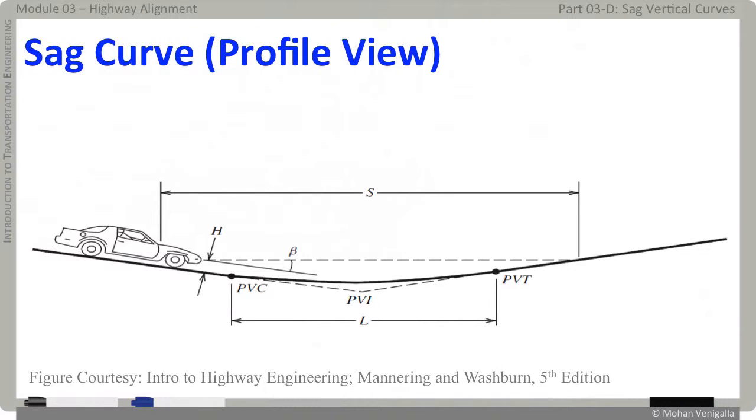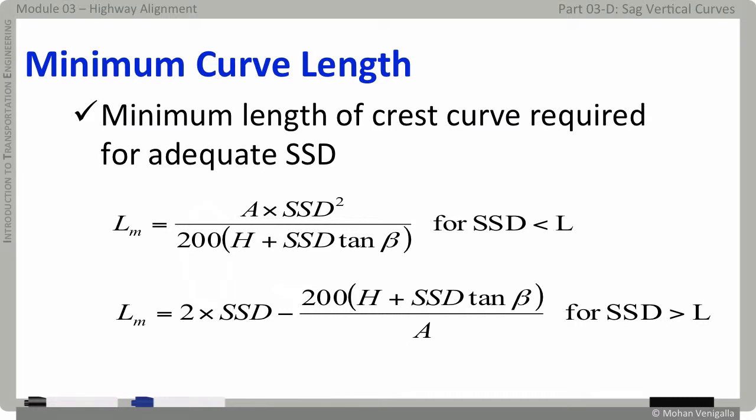The headlight variables are shown in this figure. The height of the headlight above the roadway is h, and the inclined upward angle of the headlight beam relative to the horizontal plane of the car is beta. Just like crest curves, we need expressions for determining the minimal length of the curve for a given SSD. Using trigonometric functions, just as we did in crest vertical cases, we can derive equations for minimum sag curve length.